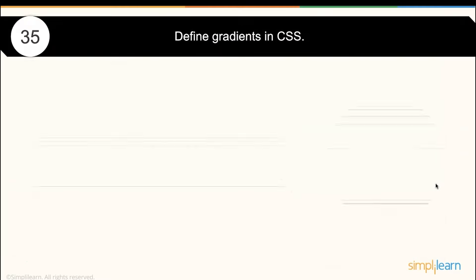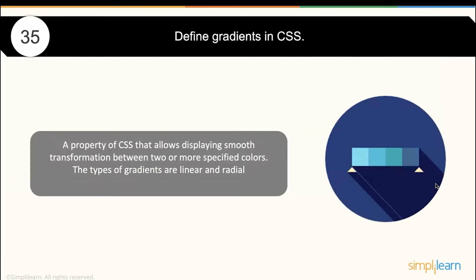Define gradients in CSS. Gradients are a CSS3 property that allows displaying a smooth transformation from one color to another. There are two types of gradients: linear gradients and radial gradients — both are used and supported.